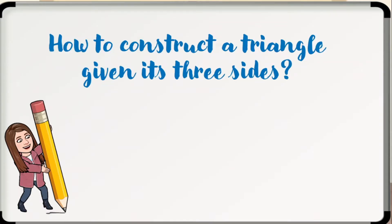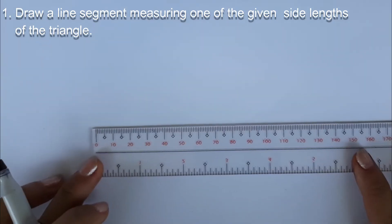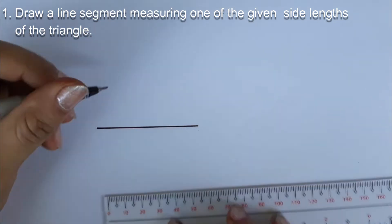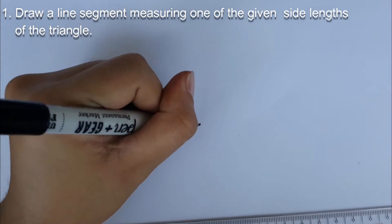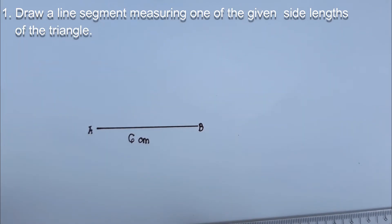Let's begin on how to construct a triangle given its three sides. Say you need to construct a triangle having side lengths 6 centimeters, 7 centimeters, and 4 centimeters. Here are the steps. Number 1. Draw a line segment measuring one of the given side lengths of the triangle. Let's draw the side having length 6 centimeters and mark its endpoints as A and B. Use a ruler to carry out this step.